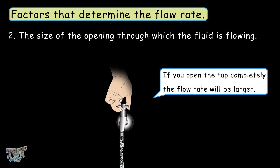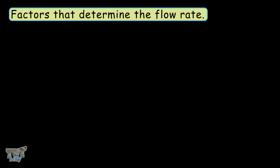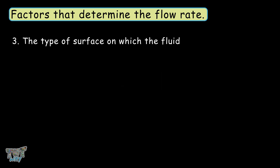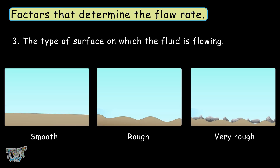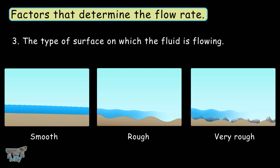Another factor that determines the flow rate is the type of surface on which the fluid is flowing. Take two or three types of surfaces, smooth to rough, and check the flow of the same liquid on all three types of surfaces. The fluid will flow fastest on the smoothest surface, so the type of surface also determines the flow rate.